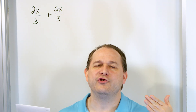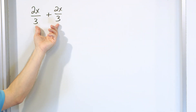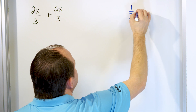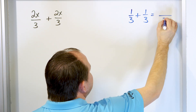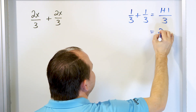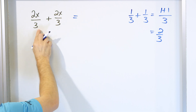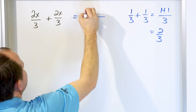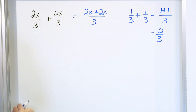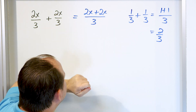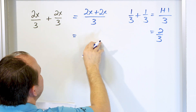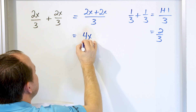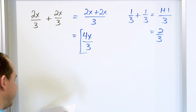When you add or subtract fractions, you must have a common denominator. In this case, we already have a common denominator. If we add one-third plus one-third, the denominator stays the same and we add the numerators: one plus one gives two-thirds. Here we do the same thing — common denominator stays as three, and we add the numerators: two x plus two x. These are like terms, both involving x to the first power. So two plus two is four, giving us four x over three. That is the final answer.